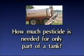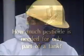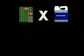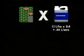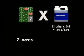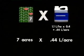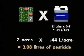How much pesticide is needed for only part of a tank? Now that he knows he has 7 acres left to spray, this farmer can figure out how much pesticide is needed. Multiply the area left to spray by the pesticide label rate. The label rate is 1.1 liters per hectare, which he multiplies by 0.4 to get the converted label rate of 0.44 liters per acre. Multiplying 7 acres by 0.44 liters per acre, he determines he needs 3.08 liters of pesticide to finish spraying the field.